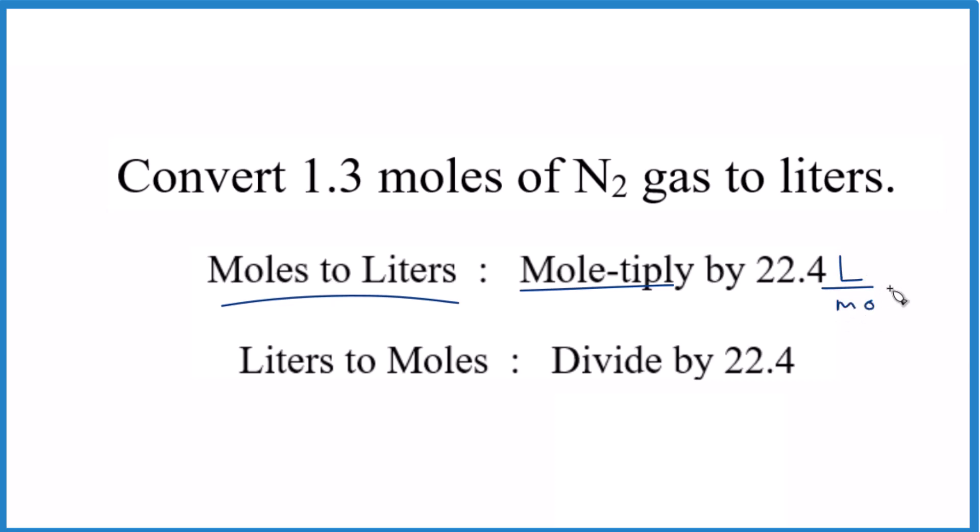Moles to liters, you multiply. When you go from moles to another unit, you multiply. For example, moles to grams, you'd multiply by the molar mass. Moles to particles like molecules, you'd multiply by Avogadro's number. Here we're going from moles to liters, so we'll multiply by 22.4 liters per mole.